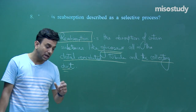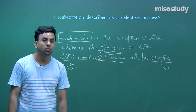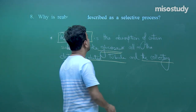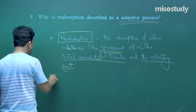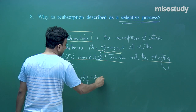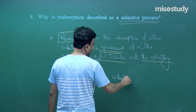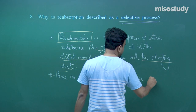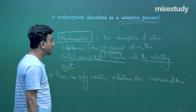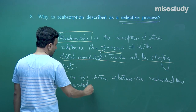But when sodium, glucose, and other important substances are passing, the tubule reabsorbs them back into the medullary interstitium from the filtrate. That is why we say reabsorption is a selective process — only selected substances are reabsorbed.